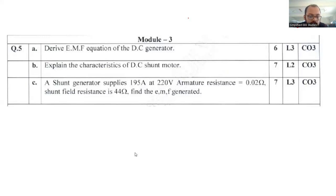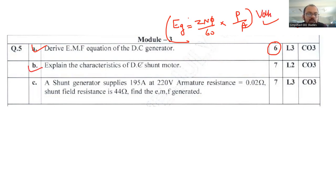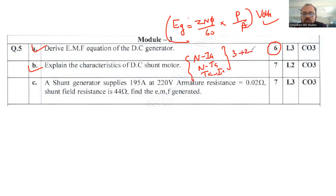Question number 5A: derive an expression for the EMF equation of a DC generator. You are supposed to derive E = (ZNΦ/60) × (P/A) with the help of Faraday's law of electromagnetic induction to get six marks. Question 5B: explain the characteristics of a DC shunt motor — specifically NIA, NTA, and TAIA characteristics.